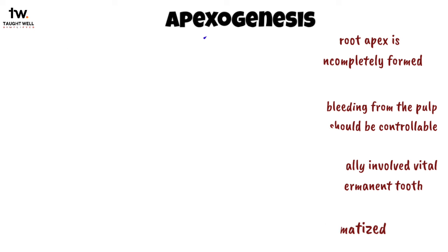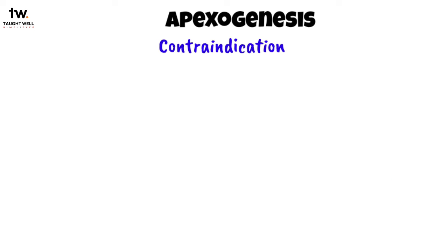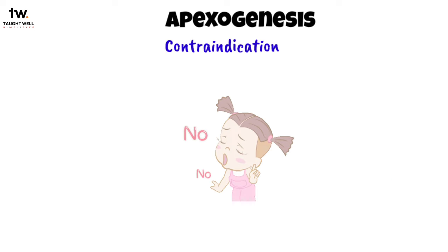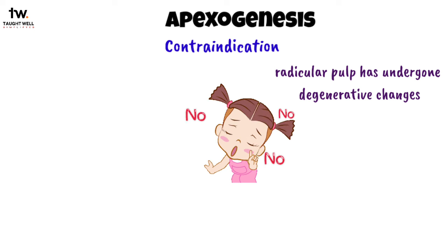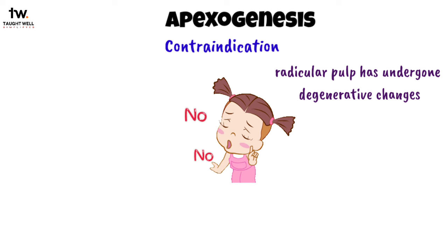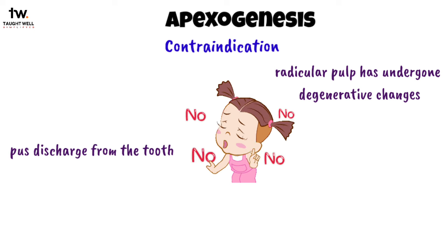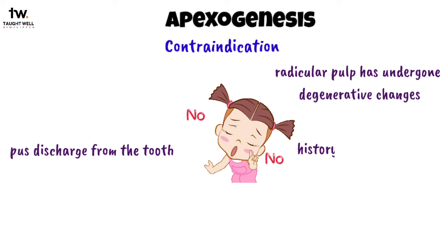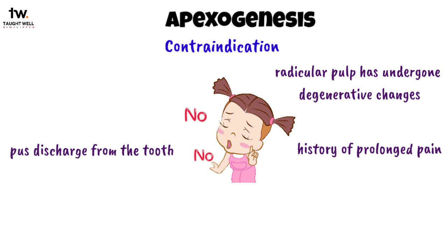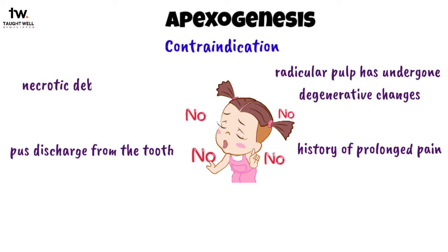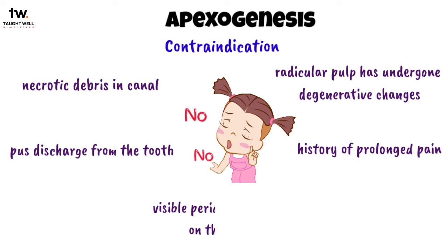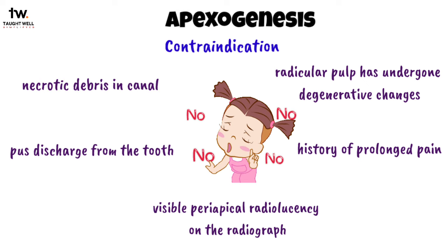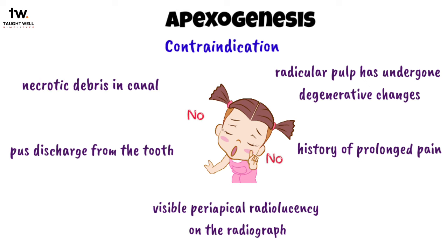The contraindications for apexogenesis are evidence that the radicular pulp has undergone degenerative changes, pus discharge from the tooth, a history of prolonged pain, necrotic debris in the canal, and visible periapical radiolucency on the radiograph.